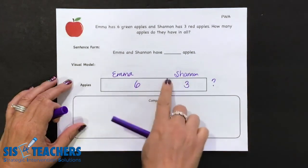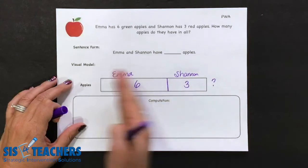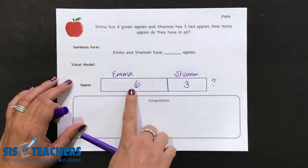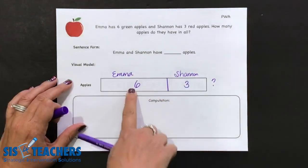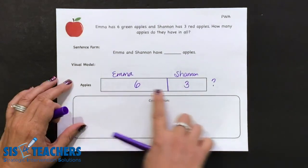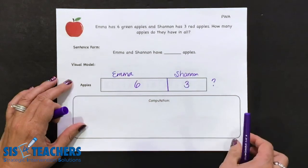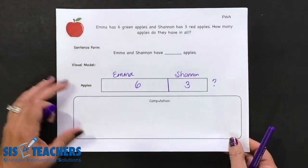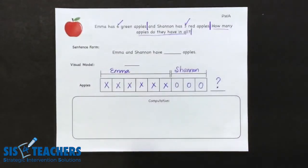So when we use the non-proportional unit bar, it doesn't have the little proportions in it. We're starting to get this to be more open-ended. Imagine if Emma had 66 apples and Shannon had 36, we couldn't possibly put all those proportional pieces inside the bar, which is why we start with the proportional and move to the non-proportional.